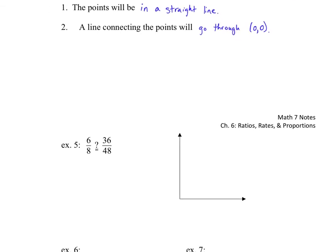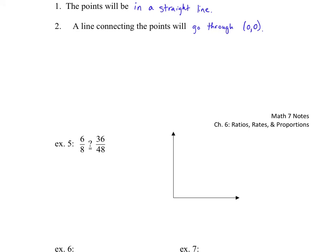Using Method 3 on 6/8 and 36/48: convert to points (6, 8) and (36, 48). My x-values go up to 40 and y-values up to 48, so I'll scale to 40 on the x-axis and 50 on the y-axis, marking increments of 10 and 20. The origin (0, 0) must be included to check whether the line passes through it.